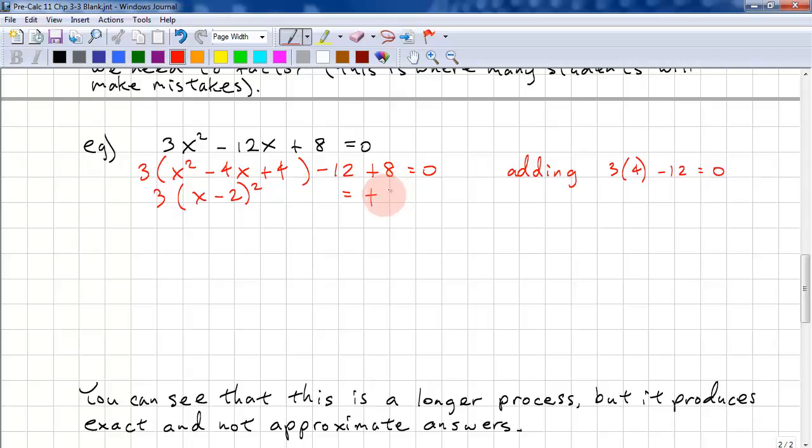Okay, so we have 3(x minus 2) squared equals, this is negative 12 plus 8. That's negative 4, but it becomes positive 4 on the other side. Again, we haven't isolated this yet, so we need to divide both sides by 3. And now we can take the square root of both sides. Plus or minus 4 over 3. And you should simplify the radical. x minus 2 equals plus or minus 2 root 3 over 3.